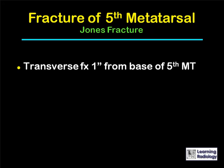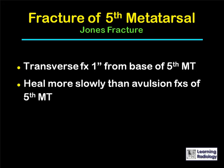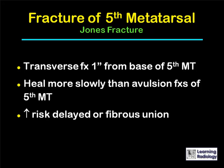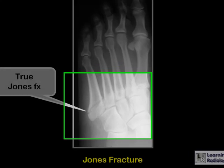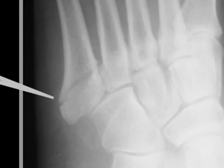A true Jones fracture is a transverse fracture of the base of the fifth metatarsal, which usually occurs about three-quarters of an inch from the base. Jones fractures tend to heal more slowly than avulsion fractures, and there is an increased risk of delayed or fibrous union. This is an example of a true Jones fracture — the transverse fracture is about three-quarters of an inch from the joint between the metatarsal and the cuboid bone.